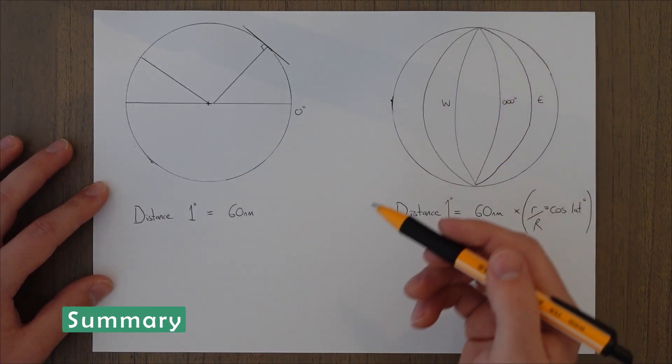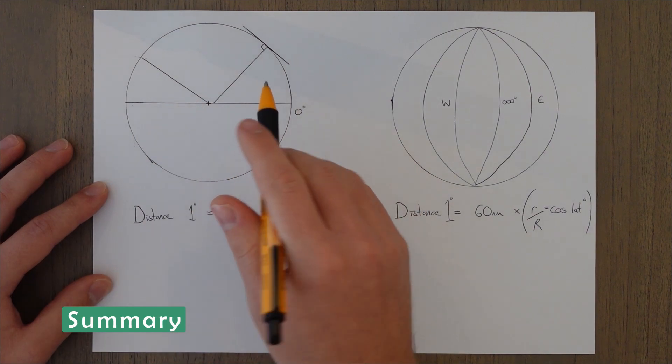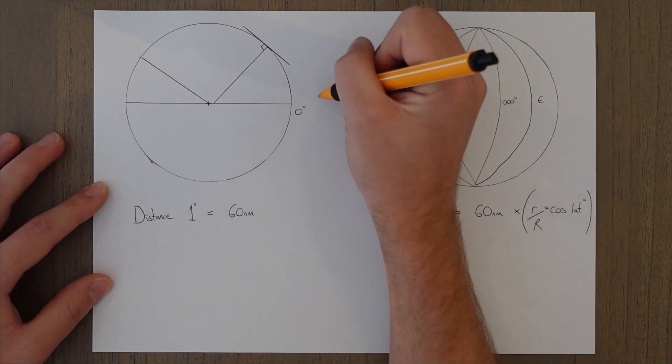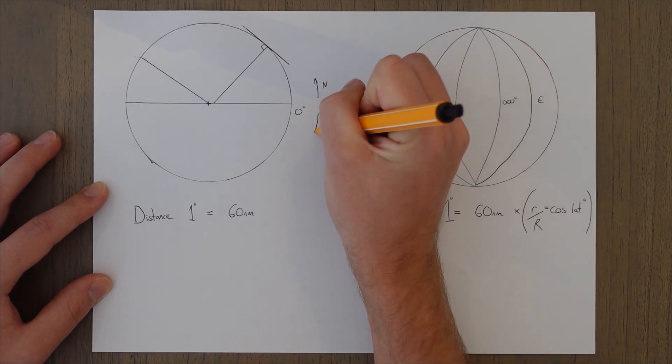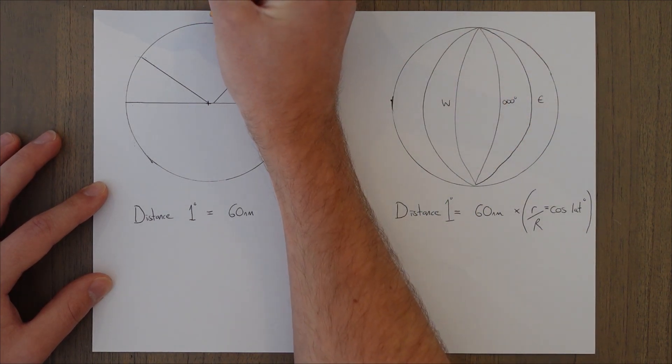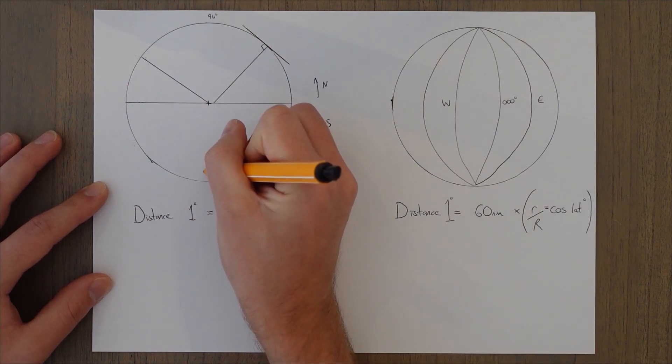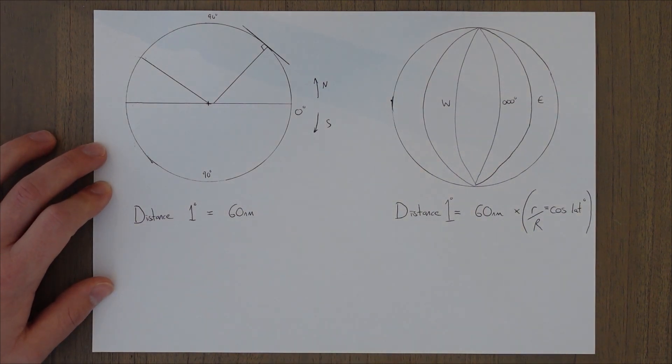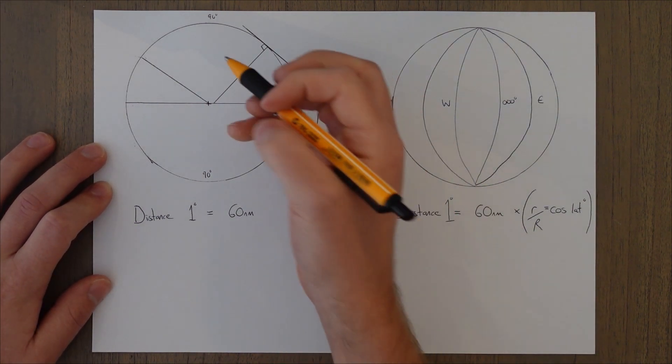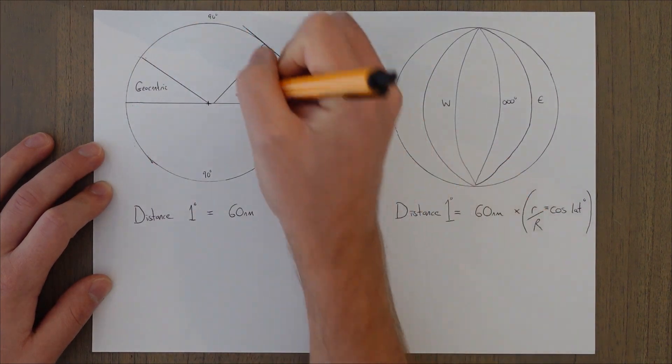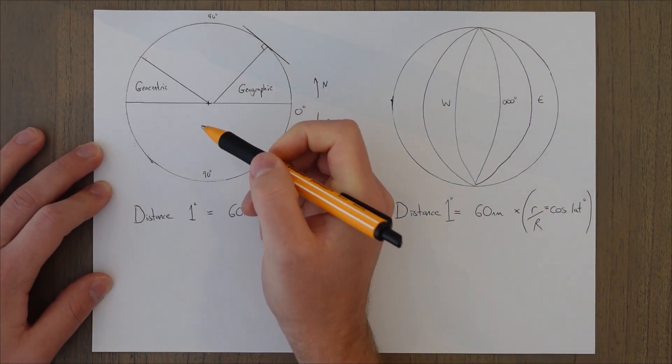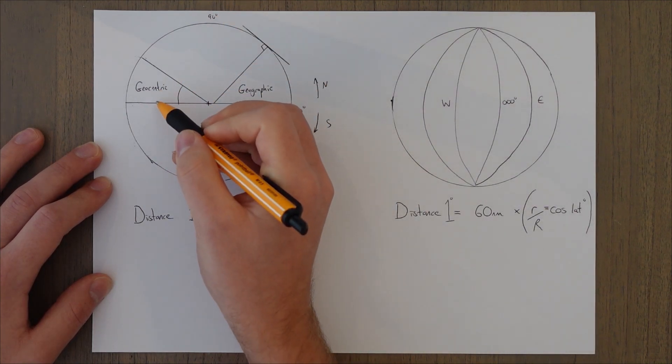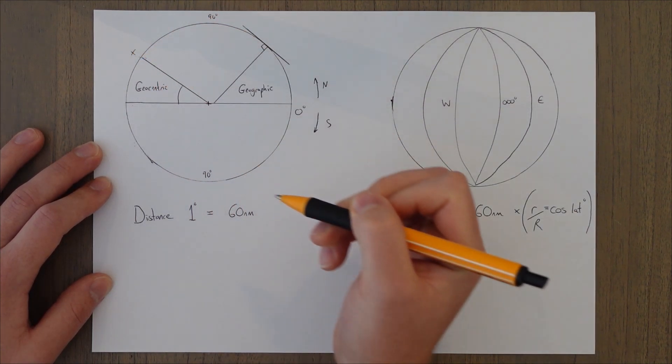To summarize then, latitude is the one that goes horizontally. And it starts with 0 degrees at the equator. We either go north or south of that point, up to a maximum of 90 at either of the poles. There are two types of latitude. There's geocentric and there's also geographic.